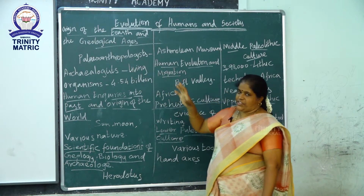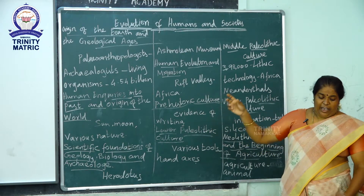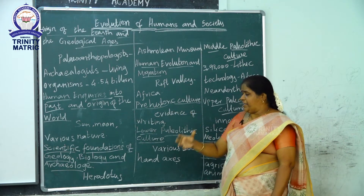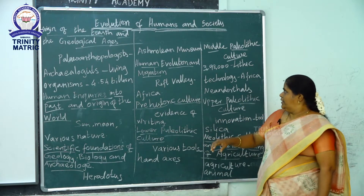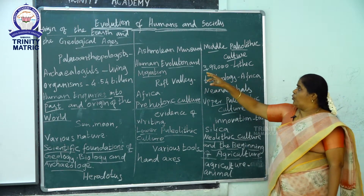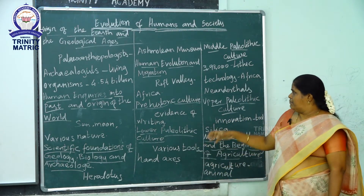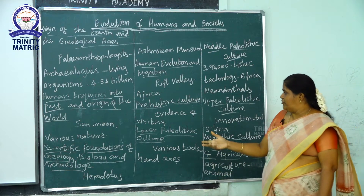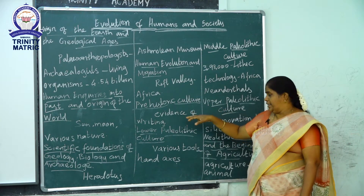Recap: A paleoanthropologist studies human ancestors and an archaeologist analyzes material remains. Humans inquired about the origin of the world and worshipped the sun, moon, and nature. Herodotus is the father of history. The Ashmolean Museum is the world's oldest museum. Migration evidence is found in Africa near the Rift Valley. There is no written evidence about prehistoric people's culture.